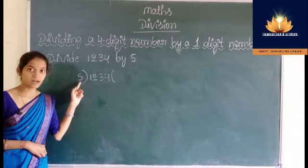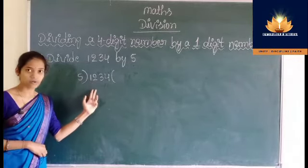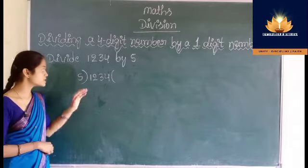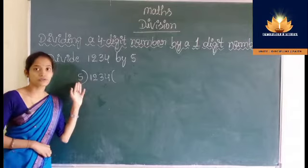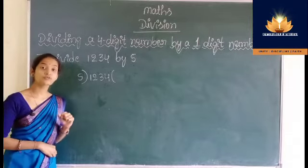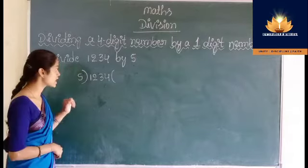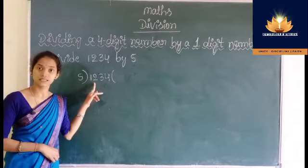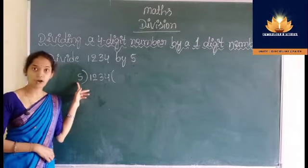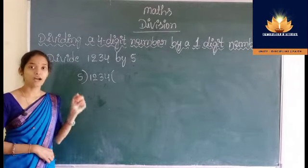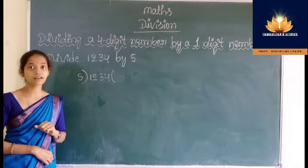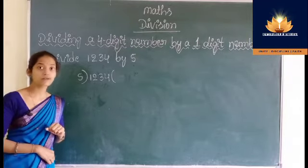So consider the 2 leftmost digits of the dividend, that is 12. 12 is greater than 5, so we can divide. Now find out which number is less than or equal to 12 in the table of 5. The table of 5: 5 ones are 5, 5 twos are 10, 5 threes are 15.